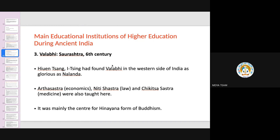Vallabhi was running in a good position until around 700 CE, but due to foreign invasions, portions were destroyed and its downfall began. In September 2017, the Government of India had plans to revive this university again.